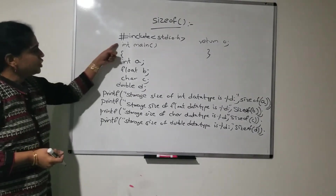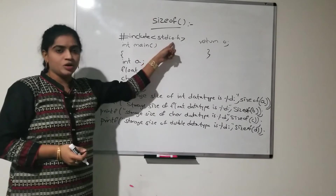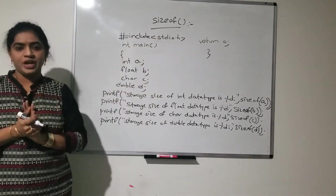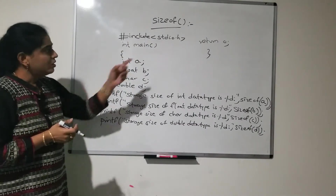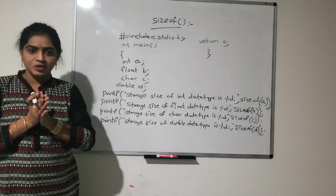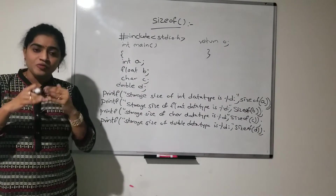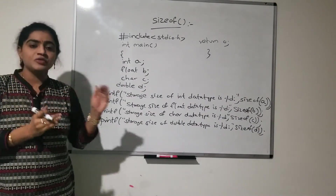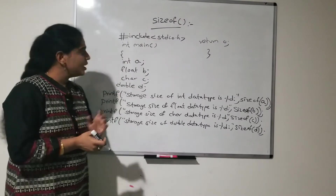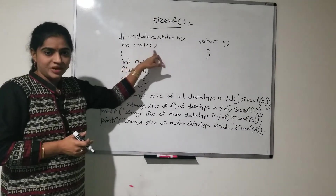Here hash include stdio.h — that means standard input output dot h header file. This header file you have to include for each and every program. If you are using printf and scanf statements in your program — any of these printf or scanf are input and output functions — you have to make use of this header file in your program.